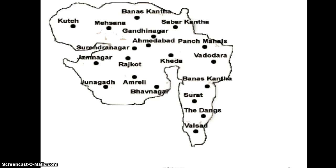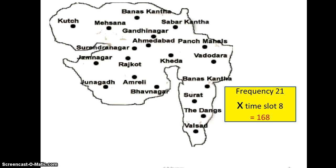We take Gujarat state as our case study. We want to cover the entire state with one mobile service. A service provider has purchased 21 frequency spectrum from the government — bi-directional — and each frequency is divided into eight time slots, that is TDMA. So 21 multiplied by 8 gives us 168 users who can communicate at the same time. That is the channel capacity.